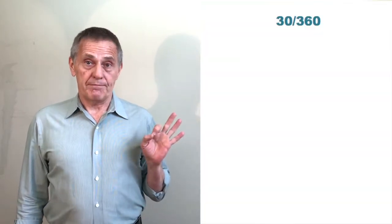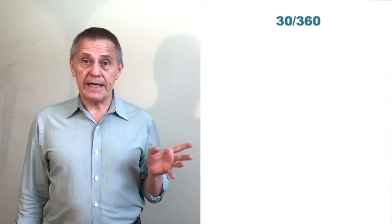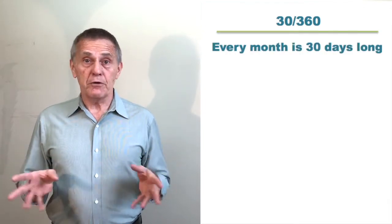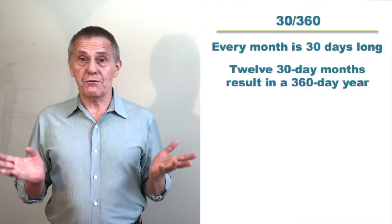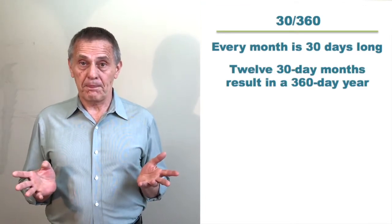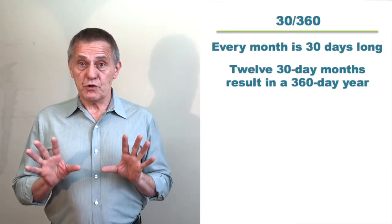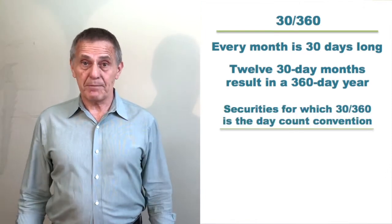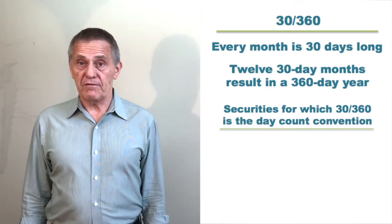So 30/360, in other words, that's a day count convention where we're assuming every month is 30 days long, and naturally a year made up of 12 30-day months is a 360-day year. That is by far the most widely used convention in terms of number of fixed income market segments that have their calculations based on that convention.